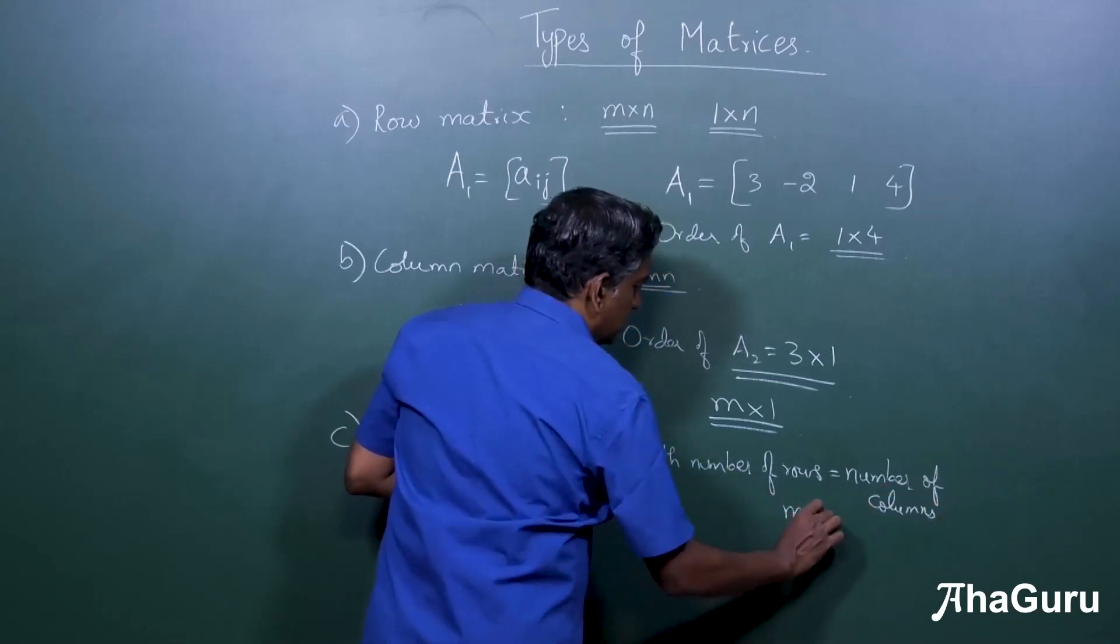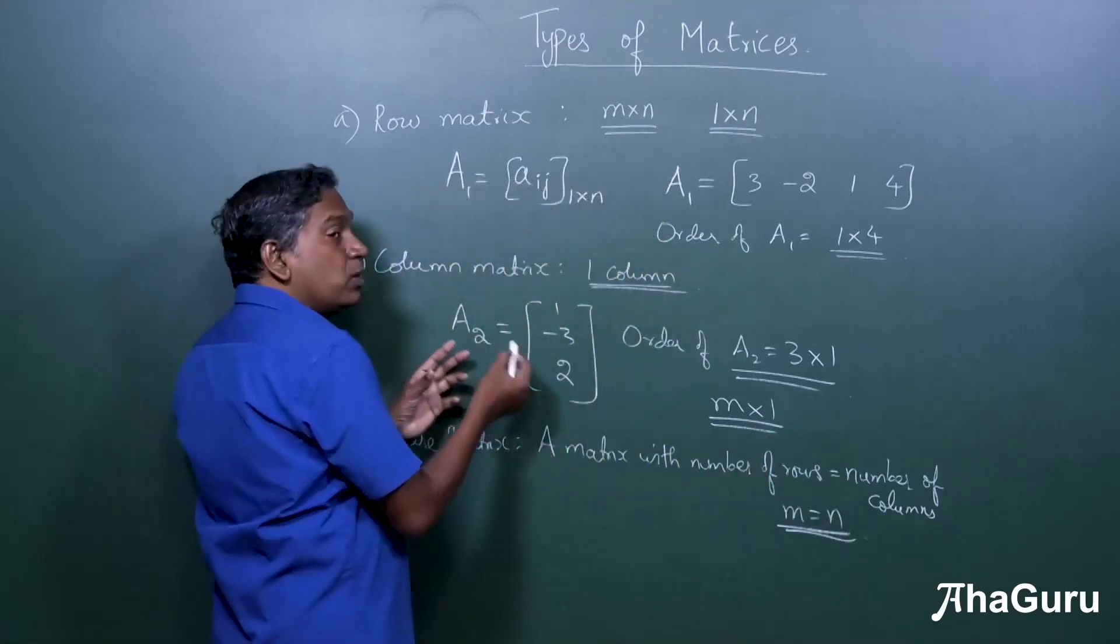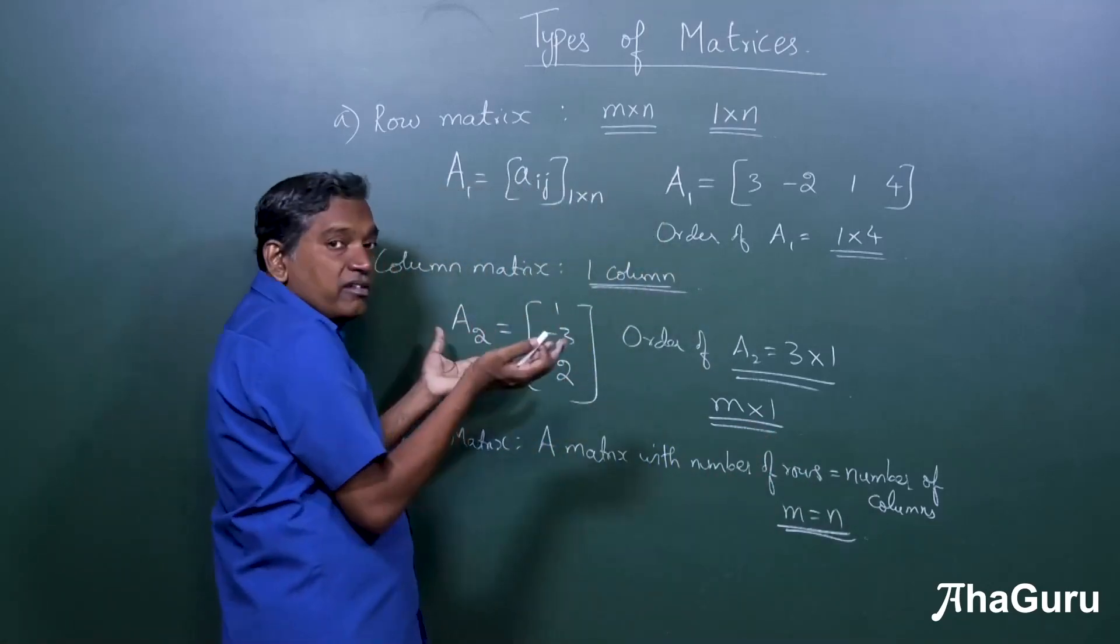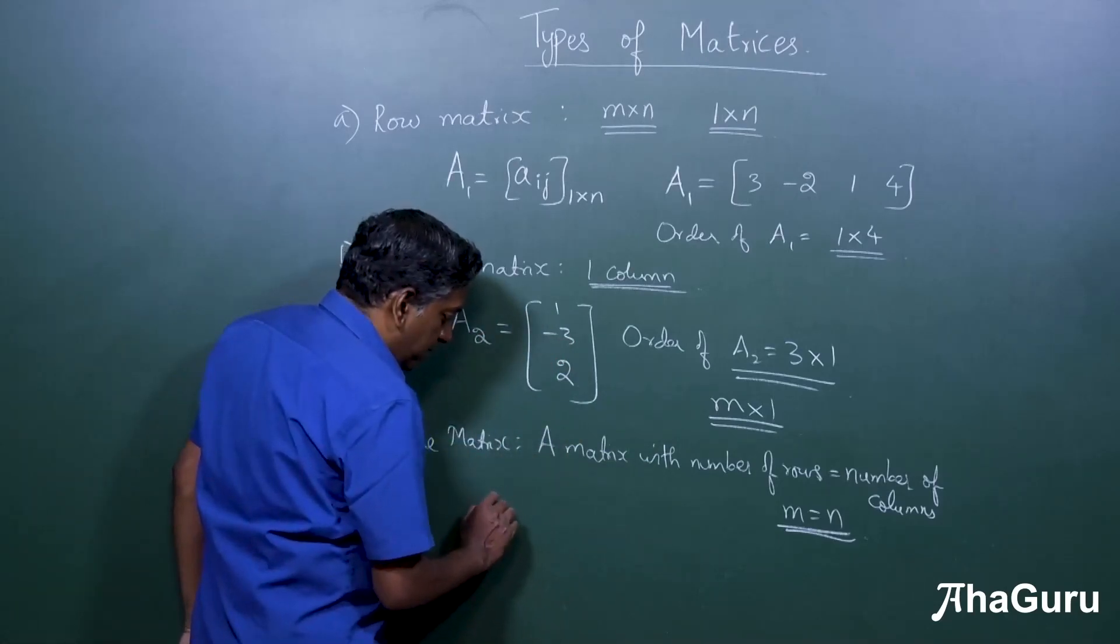In other words, m equals n. So a square matrix has equal number of rows and columns. The word square itself sort of communicates that.